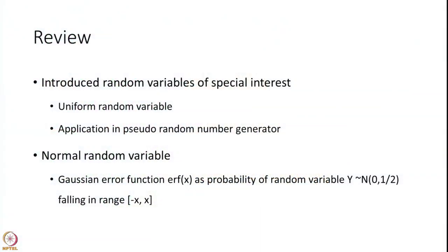We also said that the Gaussian error function is directly related to the normal random variable. The Gaussian error function shows the probability of a random variable y falling between minus x and plus x, when y is distributed as a normal with mean 0 and variance one-half.